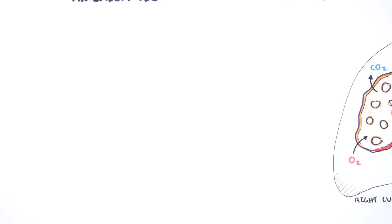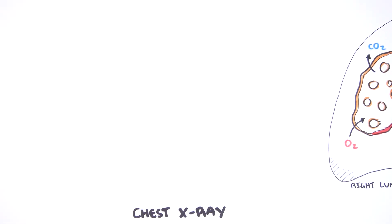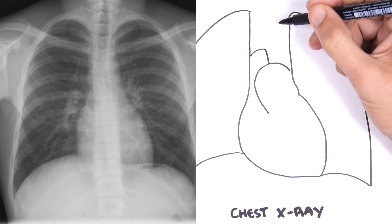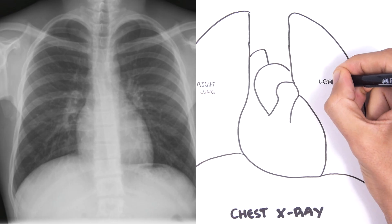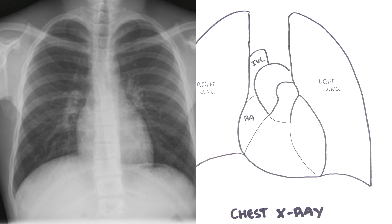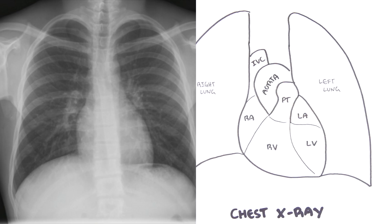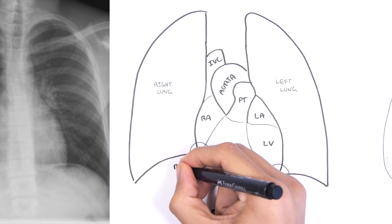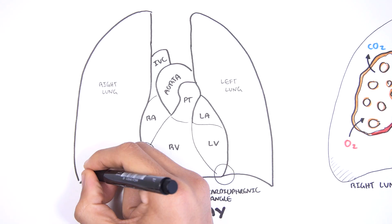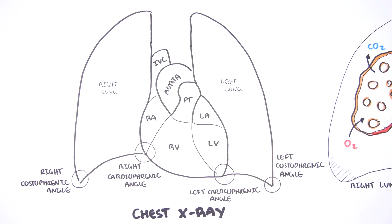Now that we know the lungs and heart are in close proximity, I wanted to look at something clinical — a chest X-ray and what each part represents. This is a normal chest X-ray. You can see your right lung and left lung, your superior vena cava, right atrium, right ventricle, pulmonary trunk, left atrium, left ventricle, and your aorta. Important angles to remember are your right and left cardiophrenic angles and your right and left costophrenic angles. Blunting of these angles represents pleural effusion.